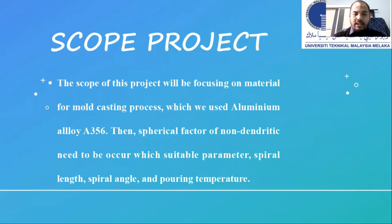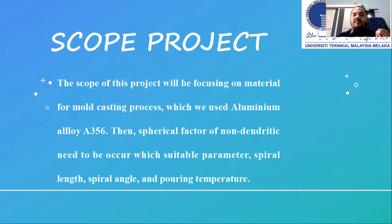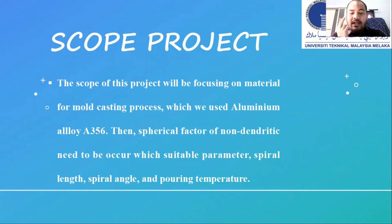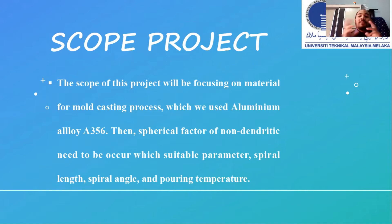The scope of this project focuses on the material of mold casting, where we use aluminum alloy. The spherical factor of non-dendritic microstructure needs to occur with suitable parameters: spiral length, spiral angle, and pouring temperature. These three variables are very important for optimizing the Taguchi method. The output parameters are the spherical factor and the grain size, and we must ensure the grain size result is the most accurate after the experiment is completed.